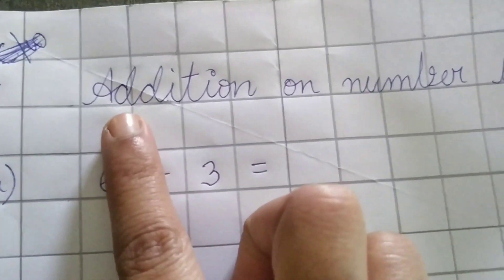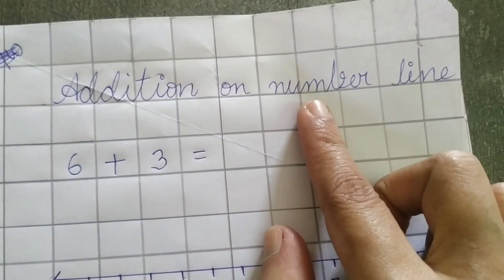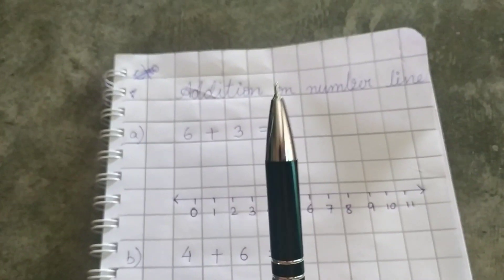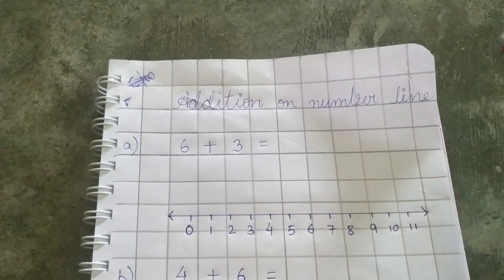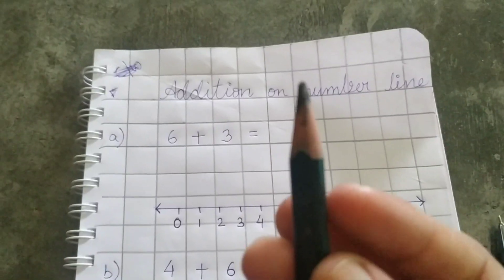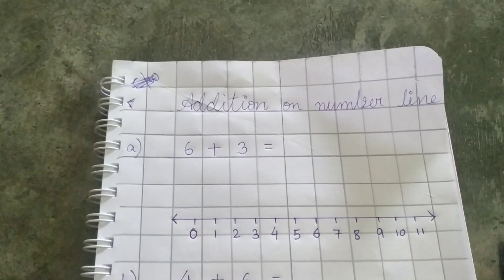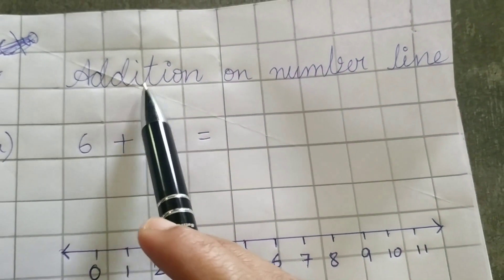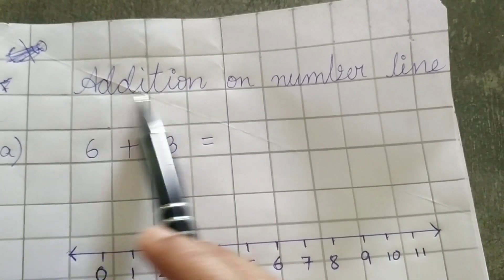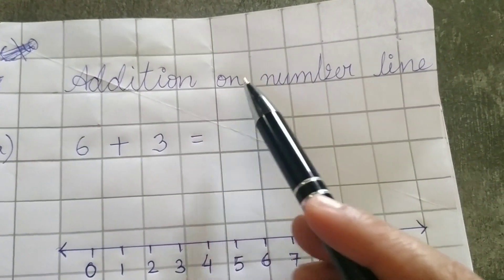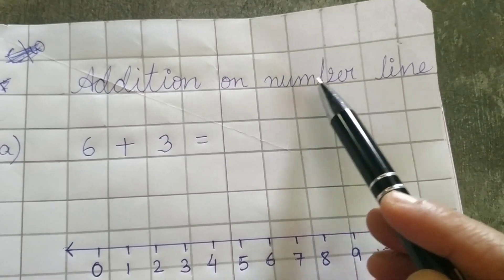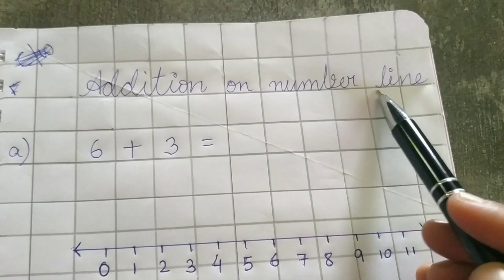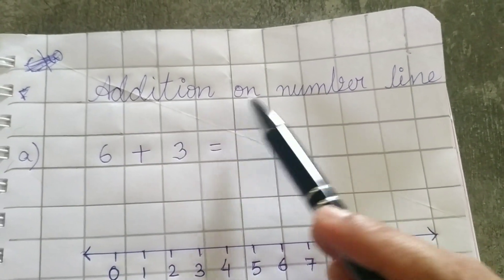So the topic is addition on number line. See I have used pen so that you can understand the writing well but you will not use pen. You will use pencil. You will write down it with pencil. So A D D I T I O N addition, O N on, N U M B E R number, L I N E line. Addition on number line.